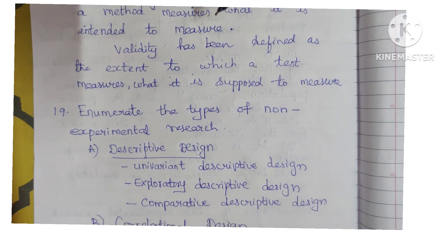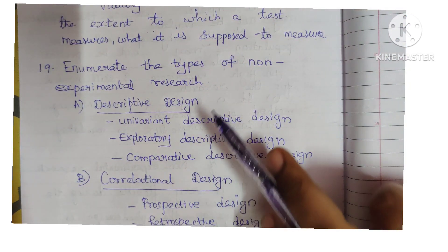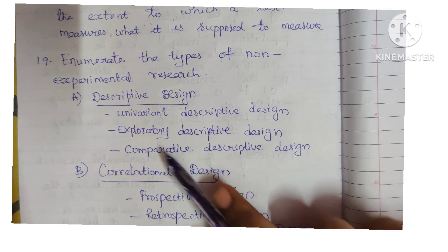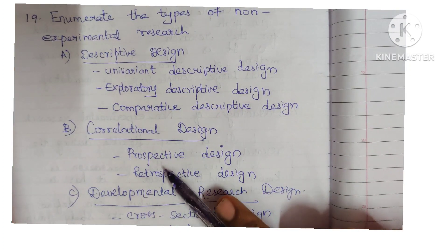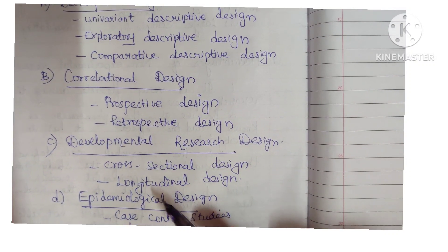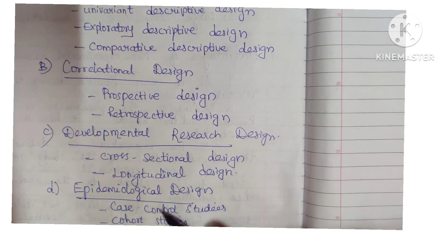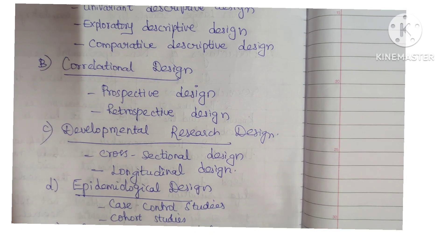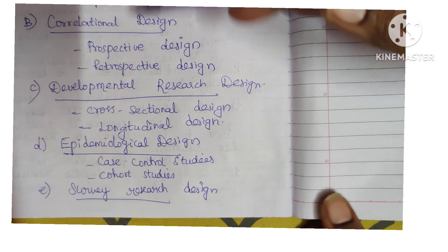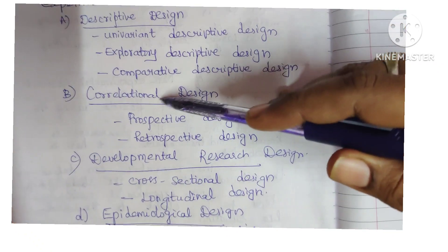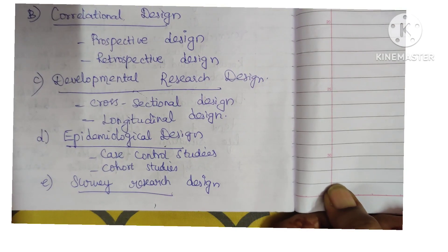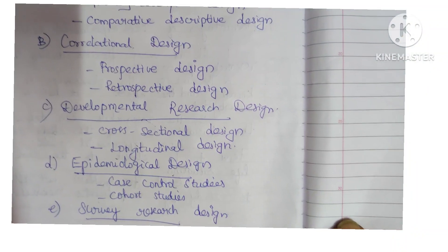Enumerate the types of non-experimental research. Descriptive design — under descriptive design: univariant descriptive design, exploratory descriptive design, comparative descriptive design. Correlational design — under that: prospective design, retrospective design, developmental research design, cross-sectional design, longitudinal design, epidemiological design, case control studies, cohort studies, survey research design. You can write the main types: descriptive design, correlational design, developmental research design, epidemiological design, and survey research design.